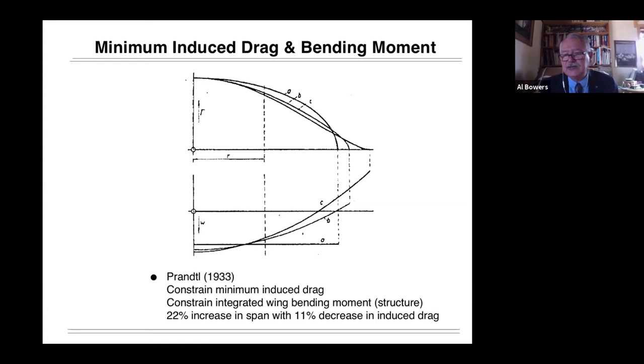I often get aerodynamicists who insist that that's not the minimum drag for that wing, that you could put an elliptical load on there. And I have to point out that you can no longer do that with the same structure. You change the structure by doing that. Here, we've kept the structural weight the same for the two solutions. And so this becomes the minimum drag solution for a given structural weight. Any other solution that you would come up with for that amount of structure would have a higher drag.